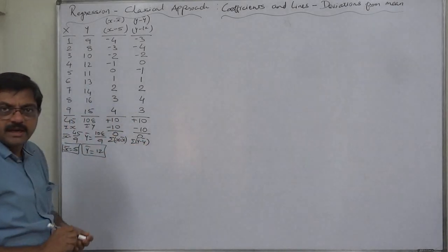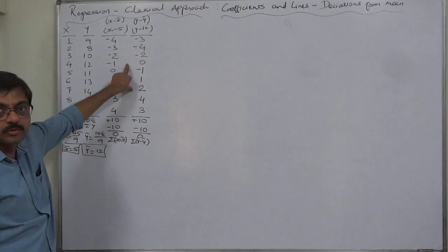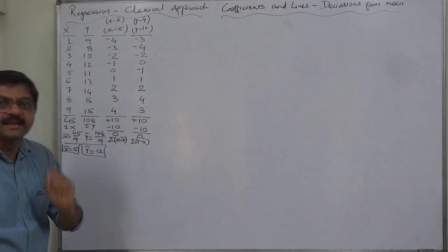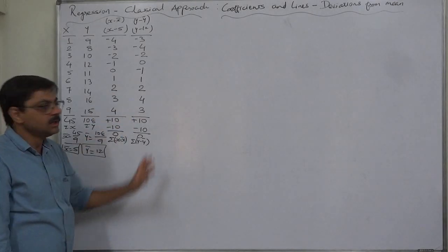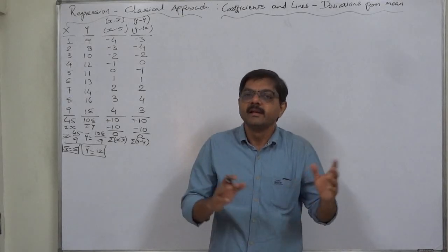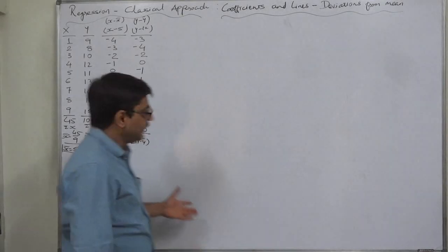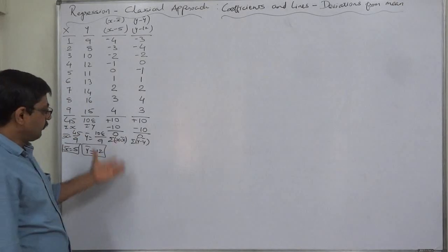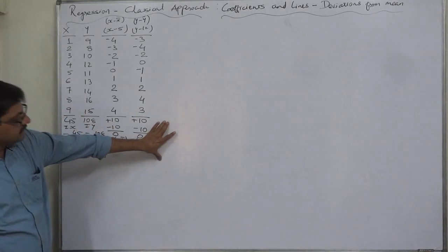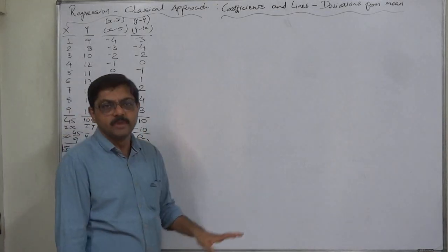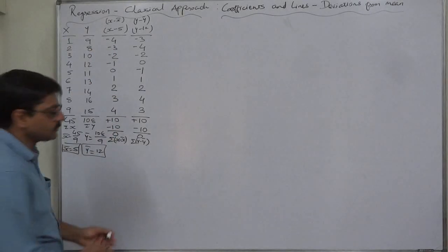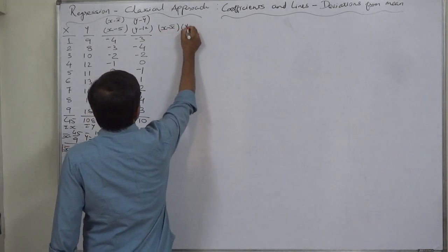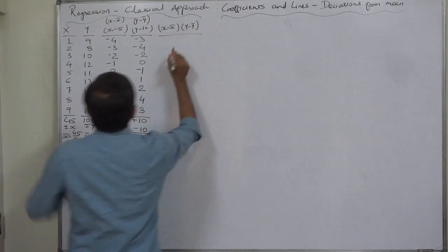I suggest checking these columns every time because the three remaining columns are dependent on these two. If there is even a single error in either of these two columns, all the remaining columns will carry that error, and all the summations and final answers derived from all five summations will be wrong. So always check the correctness of these two columns invariably.